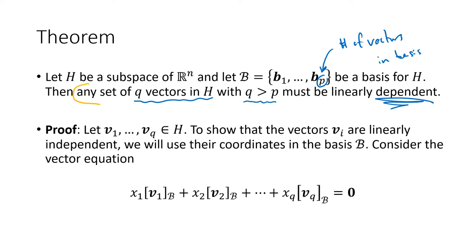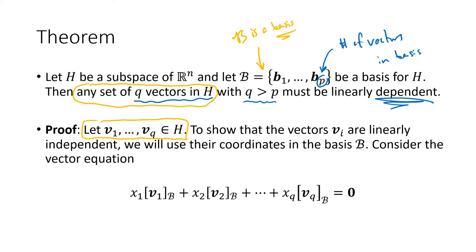How does this proof work? This proof is about any set of q vectors. We start by supposing someone hands us a set of q vectors in h — we'll call those the v vectors. Those are the mysterious vectors we're trying to find out something about. The b vectors form our basis, so we know a lot about it. In particular, we can find coordinates for any vector in h using that basis.